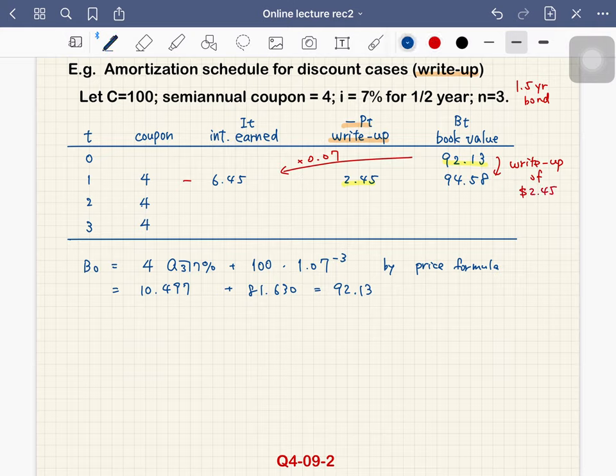So again, we multiply this balance by 7%, then we get 6.62. Then we subtract 4, but it becomes negative. So we flip the sign, 2.62. Then write-up is 2.62. So we add 2.62. Then we have 97.20.